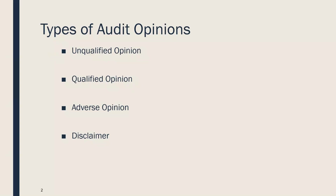The word 'unqualified' sometimes trips people up. Students ask why it's called unqualified, because it doesn't sound like something good. The way to think about it is that unqualified means there's no asterisk — the auditor isn't saying 'but,' they're just saying this is a clean report. There might have been issues, but the control objective and audit objective were met. There's no ifs and buts, no asterisk to that opinion. That's good.